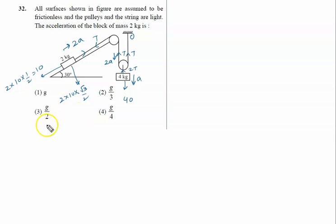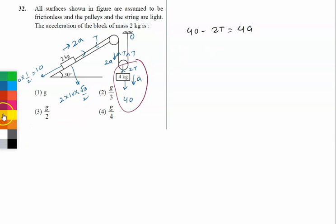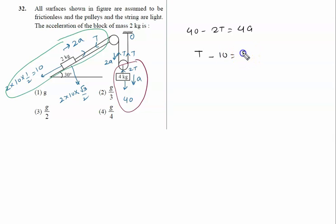Now we'll write the equation for this block. This block is moving in the downward direction, so 40 minus 2T equals 4a. For this block, T minus 10 equals mass 2 times acceleration 2a, so T minus 10 equals 4a.